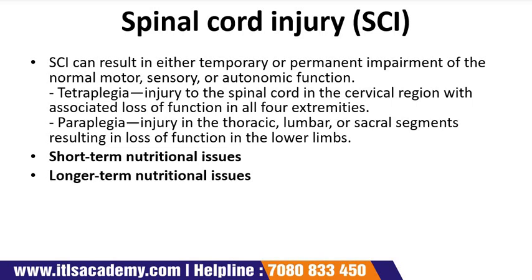The next injury type is spinal cord injury (SCI), which can result in either temporary or permanent impairment of normal motor, sensory, or autonomic function. Tetraplegia refers to injury to the spinal cord in the cervical region with associated loss of function in all four extremities. Paraplegia refers to injury in the thoracic, lumbar, or sacral segment, resulting in loss of function in the lower limbs.